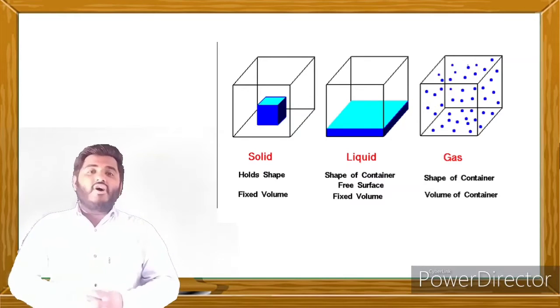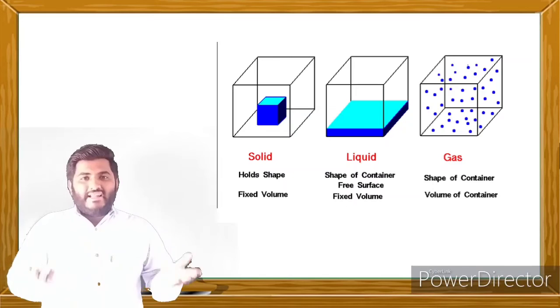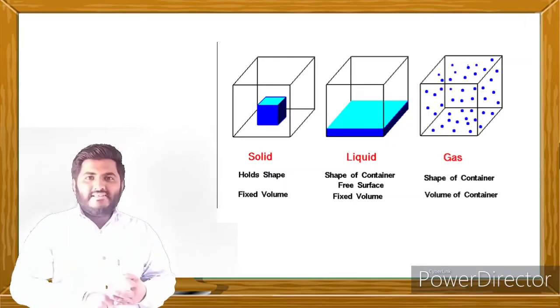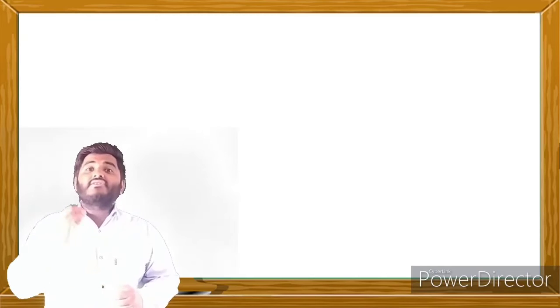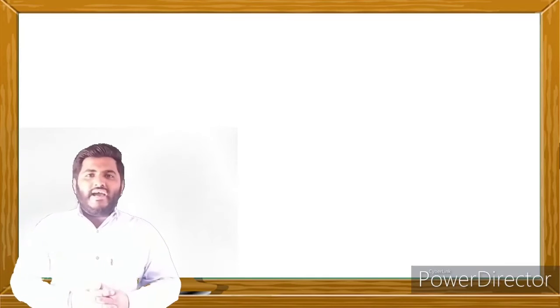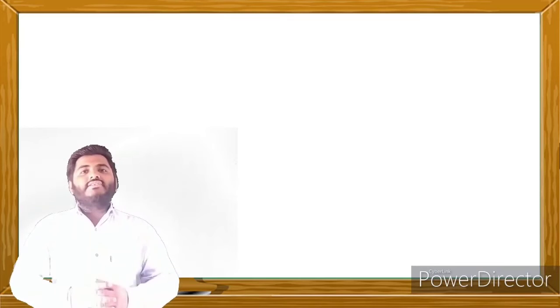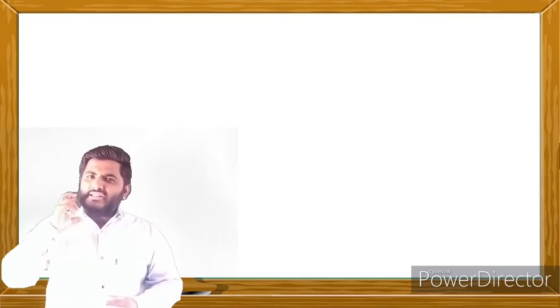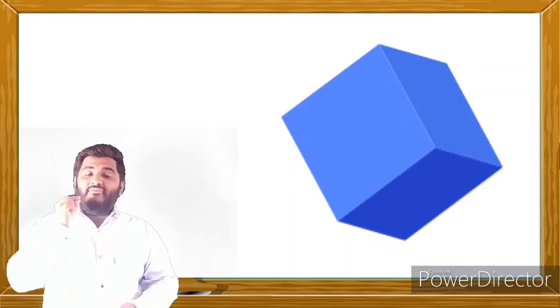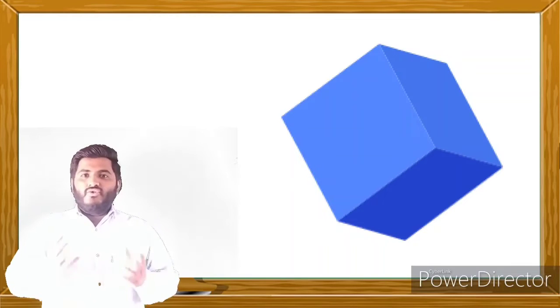So this is the introduction of solids. Matter has three states: solid, liquid, and gases. Among those, we are going to study solids in this chapter. Now, first we will study the general characteristics of solids. Solids have a definite shape, size, mass, and volume — you can take any solid and they will have a definite size, shape, mass, and volume.